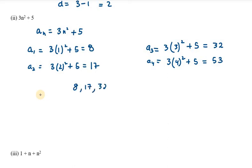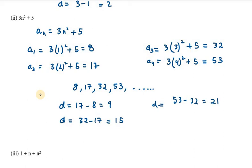So these are my first 4 terms: 8, 17, 32, and 53. Now if you check the difference, a2 minus a1 is 17 minus 8, which is 9. Next difference is 32 minus 17, which is 15. Then 53 minus 32 is 21. You can see that these differences are all different. If they are all different, then it will not be A.P. form, so this is not an A.P.